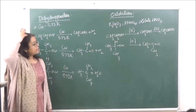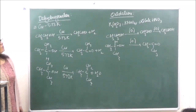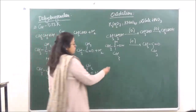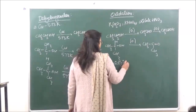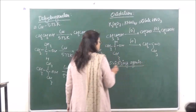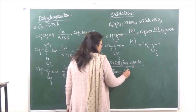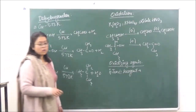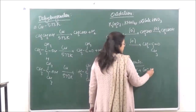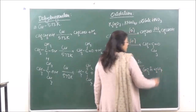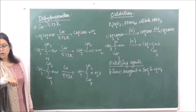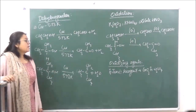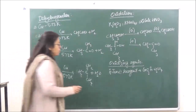Apart from K₂Cr₂O₇, KMnO₄, and dilute HNO₃, we can also use other oxidizing agents. We can use Jones reagent — that is chromium trioxide (CrO₃) in sulfuric acid (H₂SO₄). Generally, Jones reagent is used when there is a multiple-bonded system present; the double bond or triple bond does not get affected.